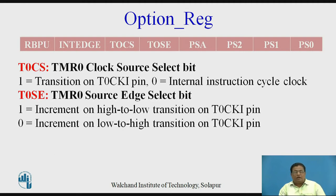The T0SE bit is called the source edge select bit, and it is associated with the external clock. If external clock (counter mode) is selected, one can decide the active edge of this clock. If T0SE is 1, the timer increments on a high-to-low transition on the T0CKI pin. If T0SE is 0, the timer increments on a low-to-high transition on the T0CKI pin.